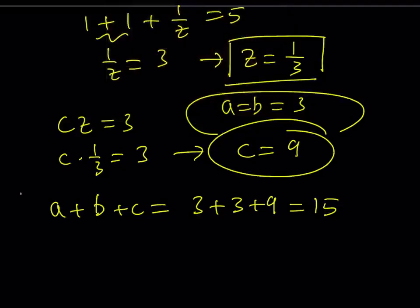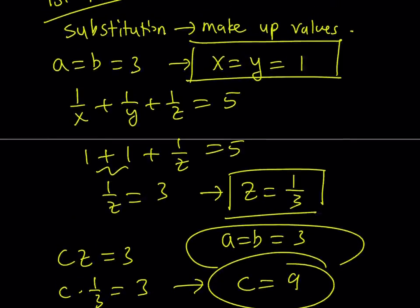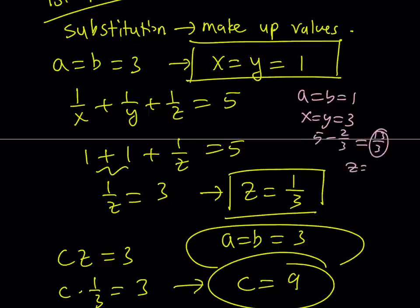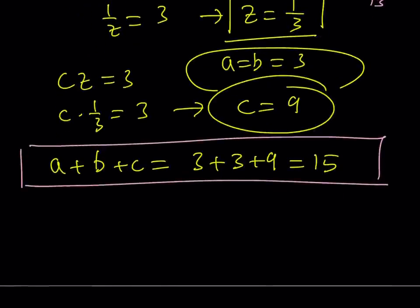Alright, great. So that is the end of the first method. By making up values. Again, if you made up different values, and you can easily test it out. I mean, it's not too hard to test. But if you pick, for example, A equals B equals one, then you would get X and Y would be both three. And then by substitution, you're going to get two thirds. Five minus two thirds is going to give you, you know, 13 thirds. And reciprocal of that would give you Z, which is three thirteenths. And from here, you can just find the C value and so on and so forth. Guess what? You're going to get the same answer. Okay. What is the answer? The answer is 15 because we're looking for A plus B plus C.